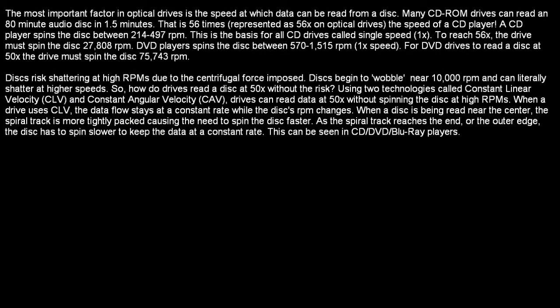The most important factor in optical drives is the speed at which data can be read from the disk. Many CD-ROM drives can read an 80-minute audio disk in one and a half minutes — that is 56 times the speed of a CD player. A CD player spins the disk between 214 to 497 RPMs. This is the basis for all CD drives called single speed. To reach 56x, the drive must spin the disk 27,808 RPMs.